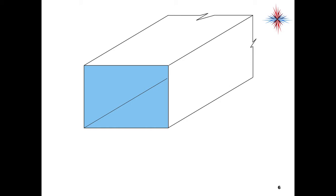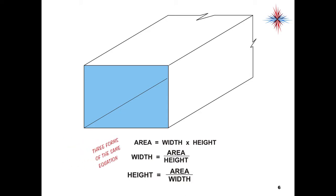Let's go back to our piece of ductwork. The area is the width times height. Width is area divided by height, and height is area divided by width. Three forms of the same equation depending on what you want to find. Again: area is width times height, width equals area over height, height equals area divided by width. That's for rectangular duct.